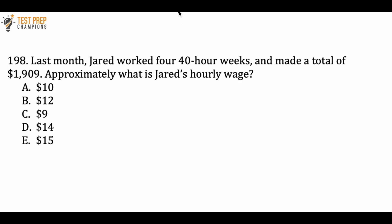The first thing that I'm going to do here is I'm going to do 4 times 40, and that's going to tell us the total number of hours that he worked, because he worked 4 40-hour weeks. So 4 times 40 gives me 160. We know that he worked 160 hours.